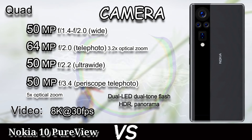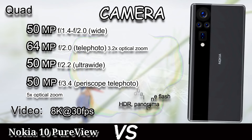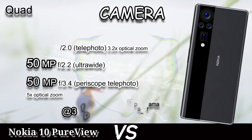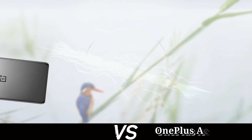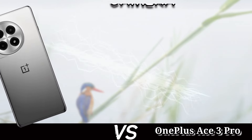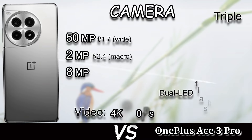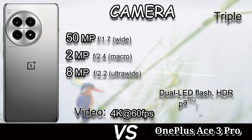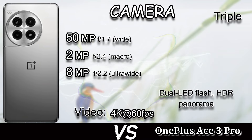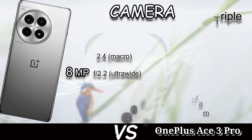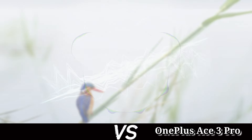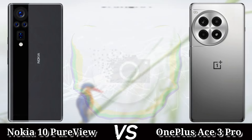The OnePlus A3 Pro comes with a triple camera setup. The main sensor is 50MP wide, 2MP macro, and 8MP ultrawide. It has dual LED flash, HDR, panorama, and records 4K at 60fps video. The selfie camera of the Nokia 10 PureView is 50MP and records 4K at 30fps video.